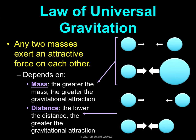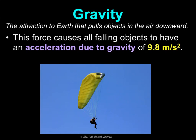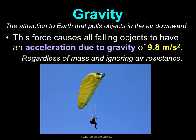Gravity is the attraction to Earth that pulls objects downward. This force causes all falling objects to have an acceleration due to gravity of 9.8 meters per second squared on Earth, regardless of mass and ignoring air resistance. In practice problems in this class, we are going to ignore air resistance and friction. So if a problem involves a falling object and asks for its acceleration, it would be 9.8 meters per second squared.